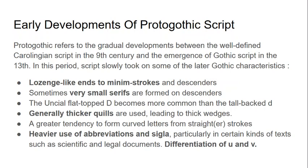Proto-Gothic refers to the gradual developments between the well-defined Carolingian script of the 9th century and the emergence of Gothic script in the 13th. It's a slow evolution. During this period, script slowly started to take on some of the later Gothic characteristics, including more lozenge-like ends to minim strokes and descenders ending in wedge-like shapes.